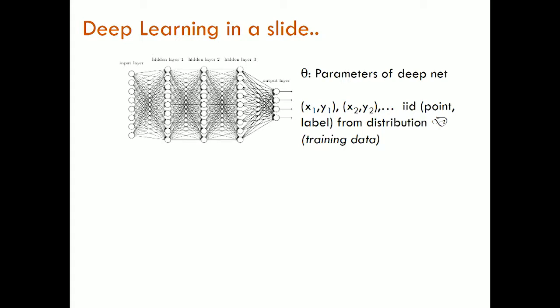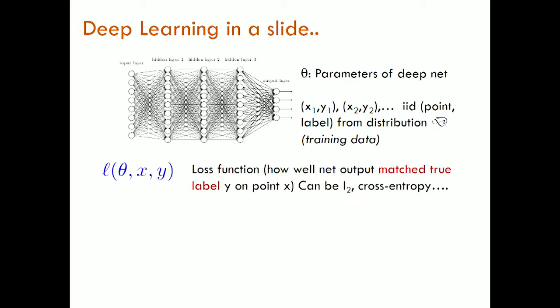In supervised learning, you are trying to classify data according to some labels. You're given some data from a distribution, which are labeled — so x1, y1 is the data-label pair. This is the training data. For each data point x and each label y, there's a loss function L(θ, x, y), where the neural net given by parameters θ measures how well its output matches the true label y when input is x. It can be formalized using L2, cross-entropy, etc.